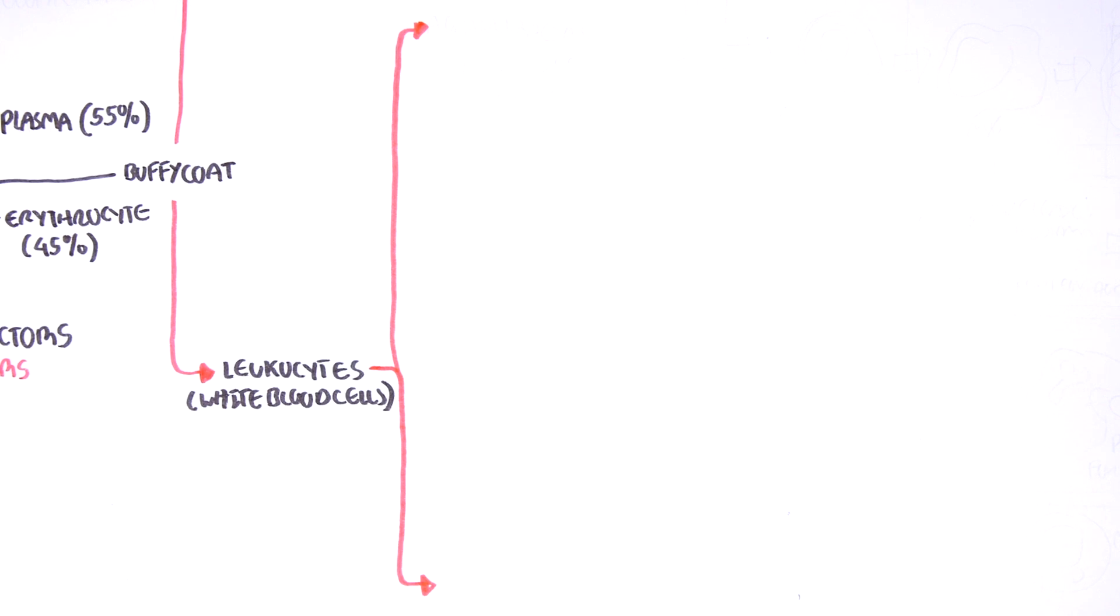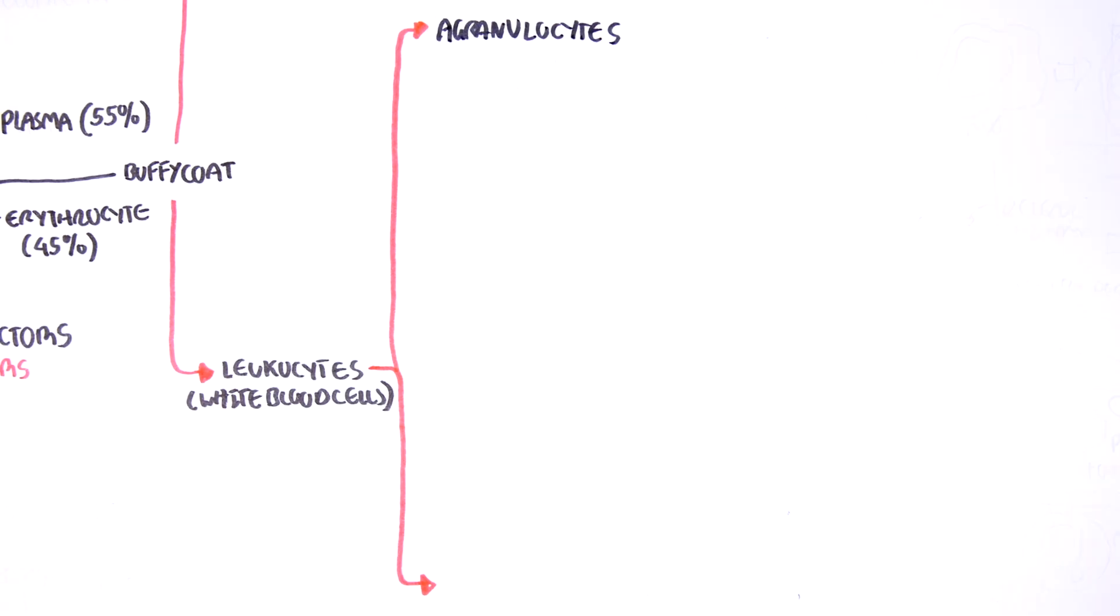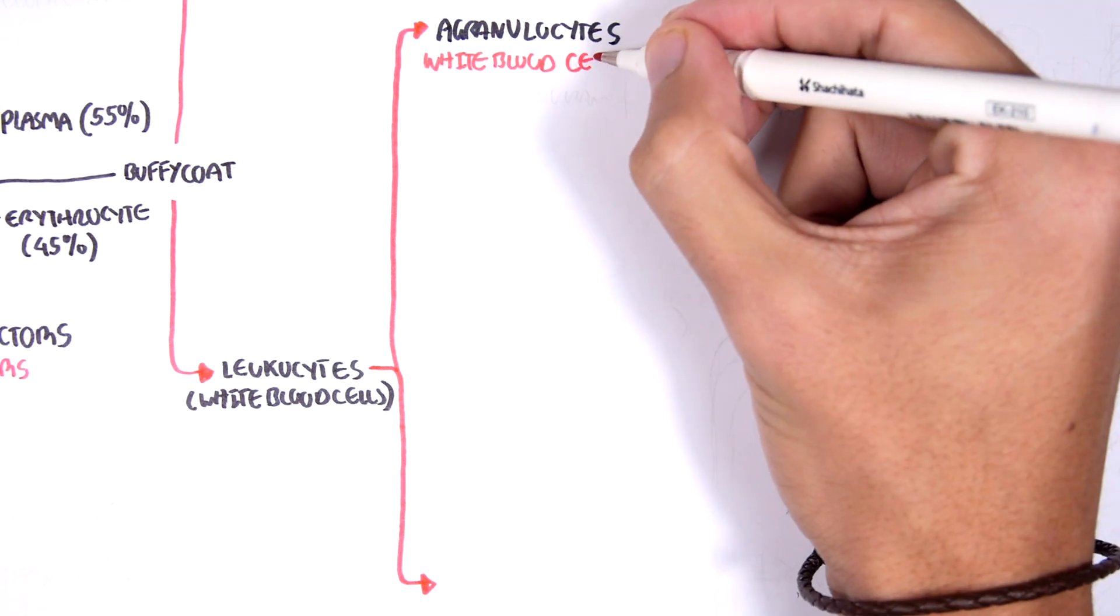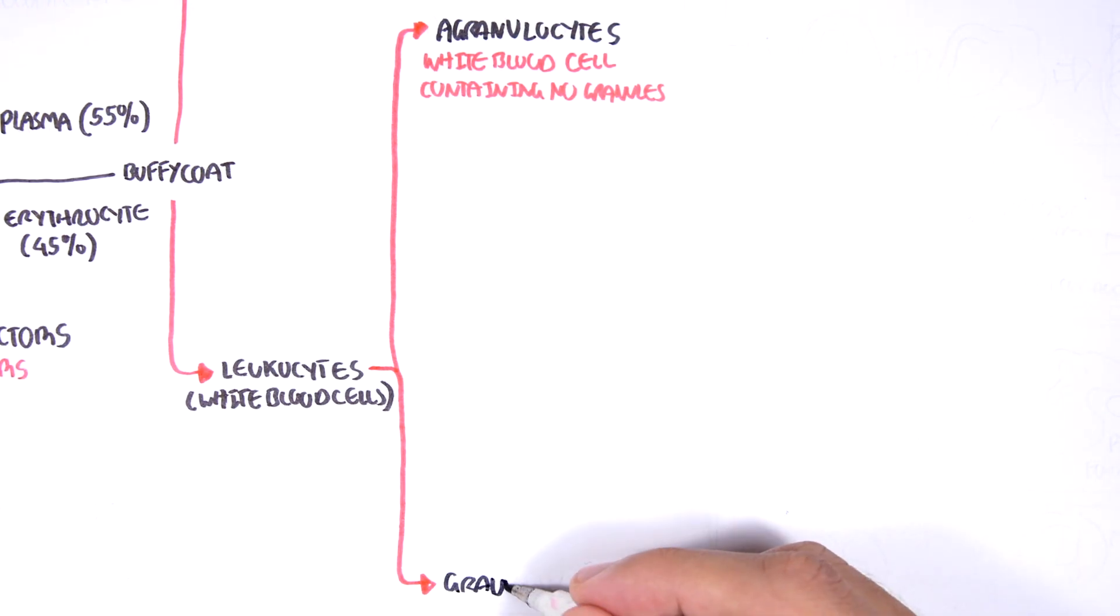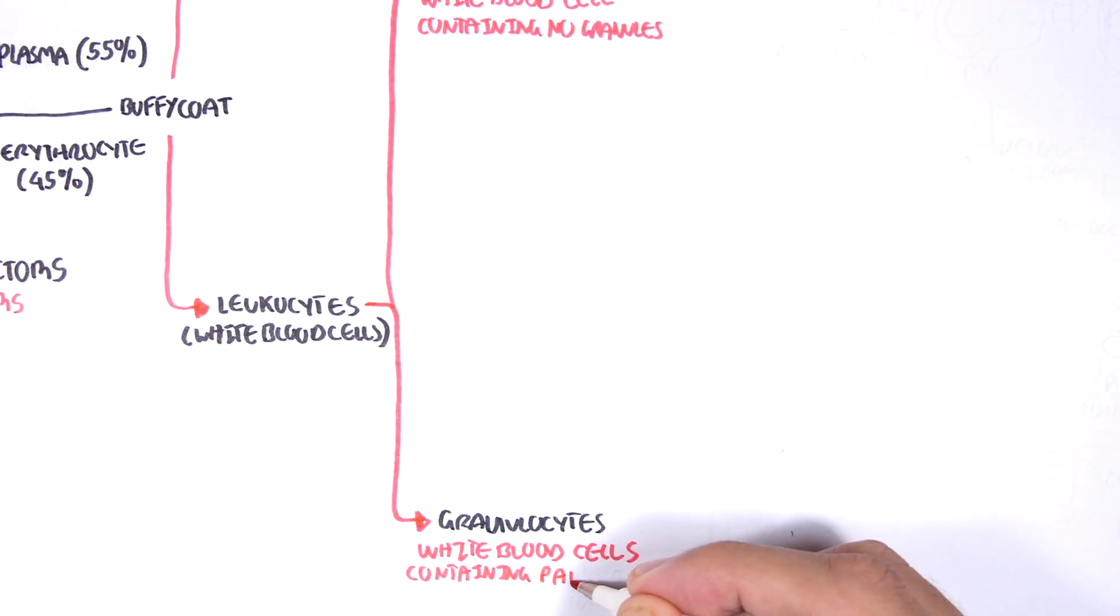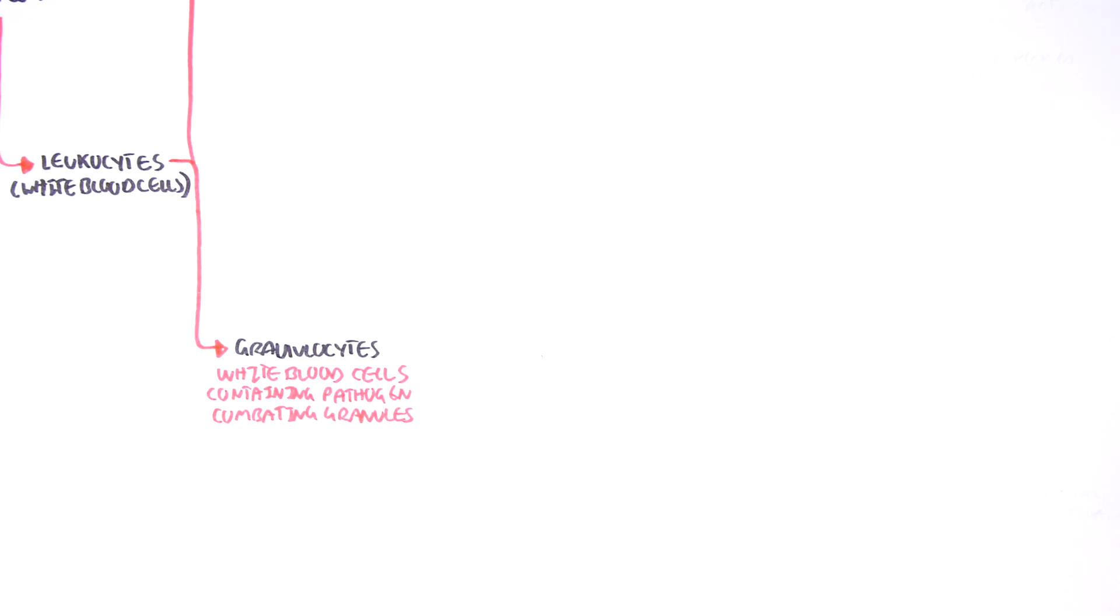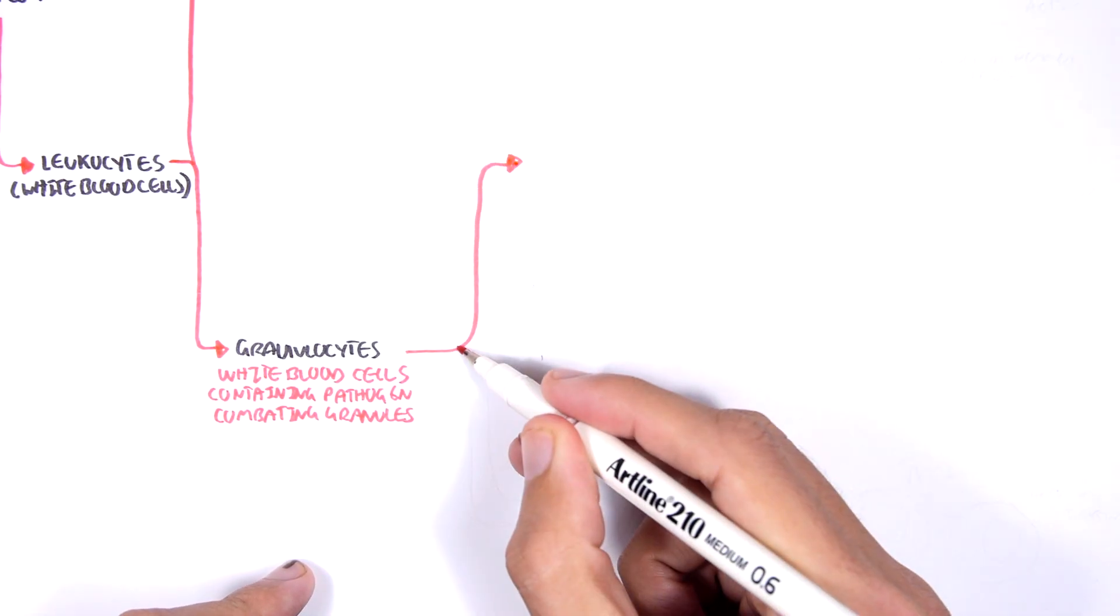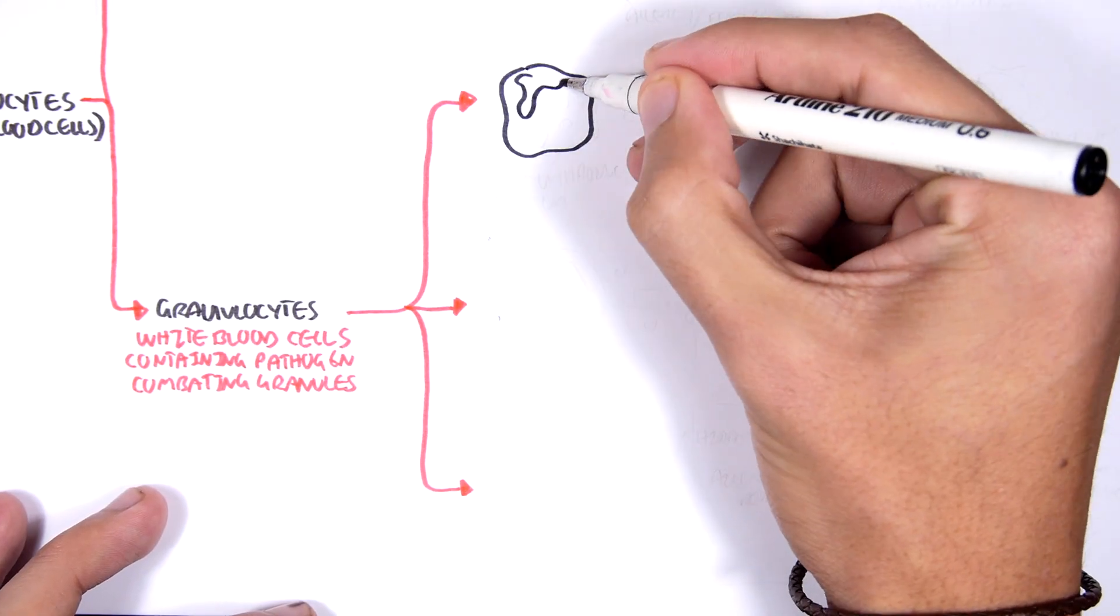White blood cells can be divided broadly into two main parts. White blood cells that do not contain granules, called agranulocytes, or granulocytes, white blood cells that contain pathogen-combating granules. So they do contain granules. Now we will firstly focus on the granulocytes, the white blood cells that do contain granules. We have three main granulocytes in our system.